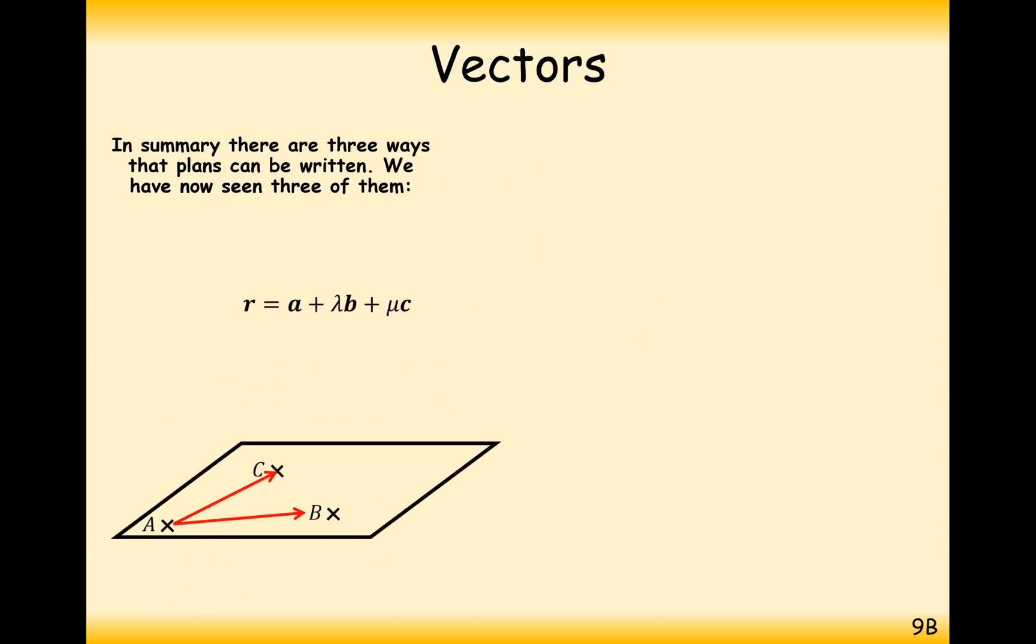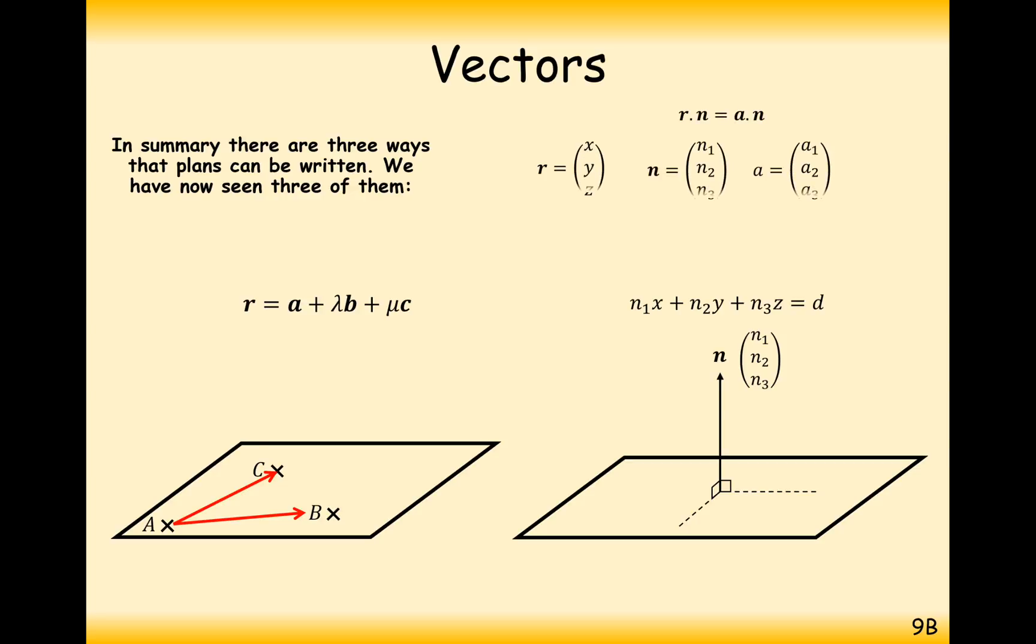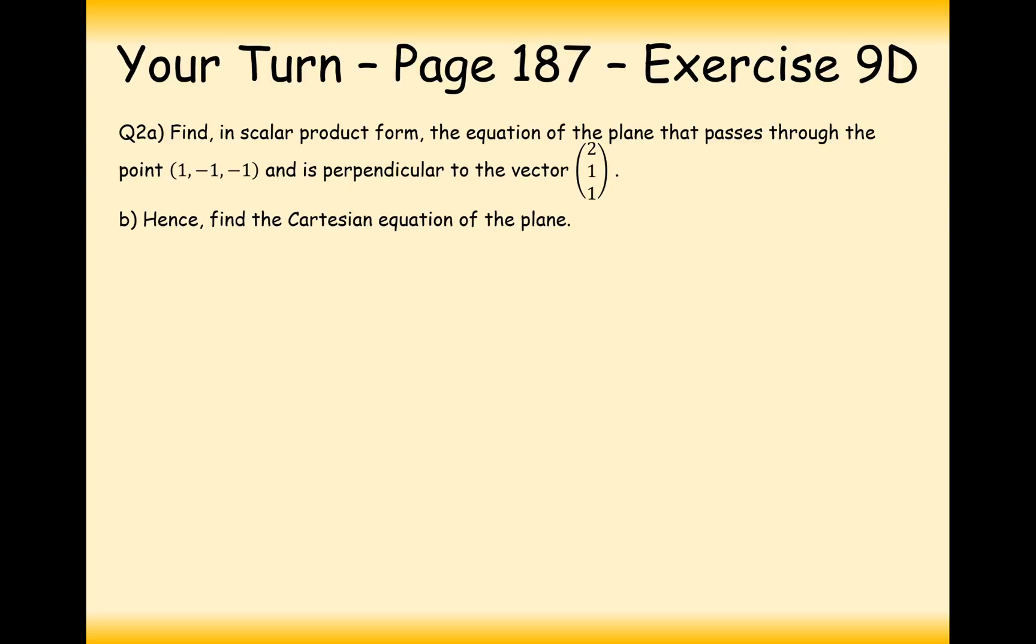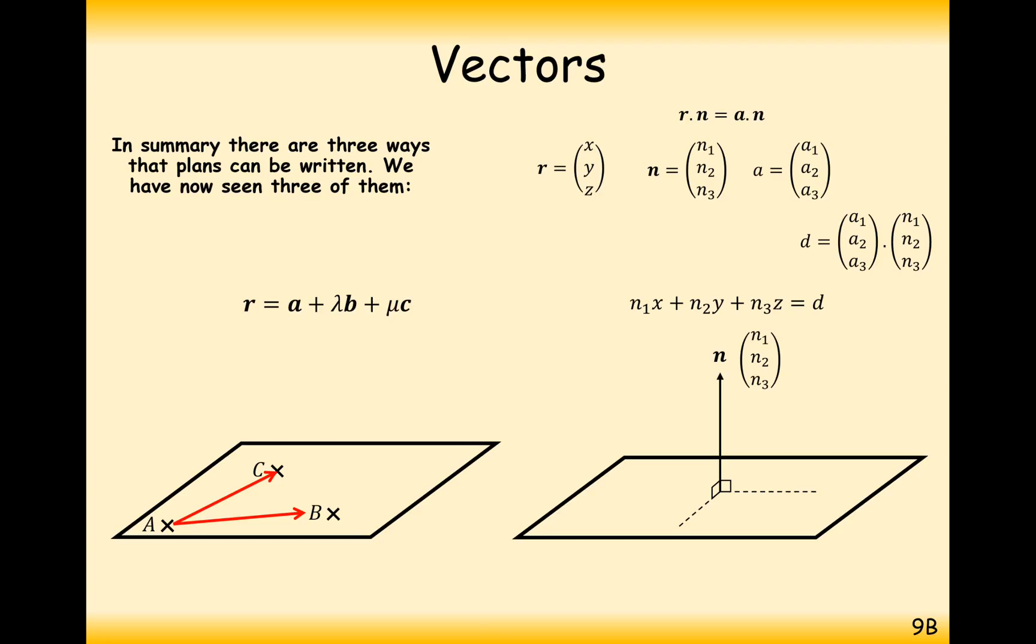So we have seen now all three forms of a plane. We've seen the vector form. We've seen the Cartesian form. And we've seen the scalar product form, where it's really easy to convert between these two on the right here. It's a bit difficult to go from this to this. There is a way of doing it. And we'll show you this in a later video. But this here is quite tricky. And this here is quite easy to convert between the two forms.